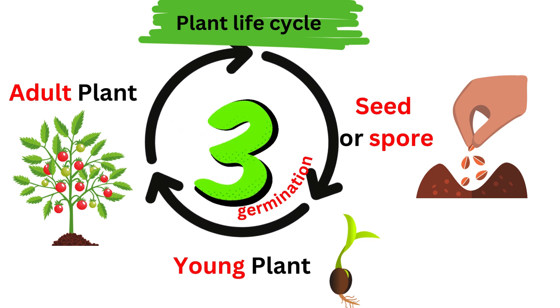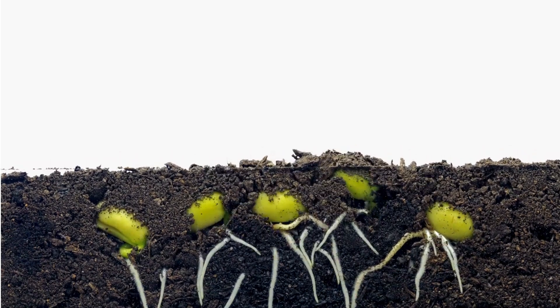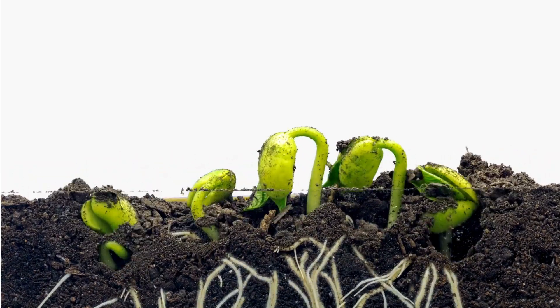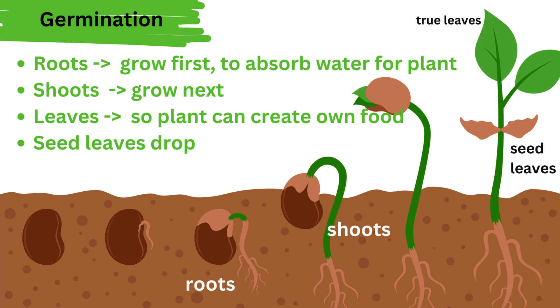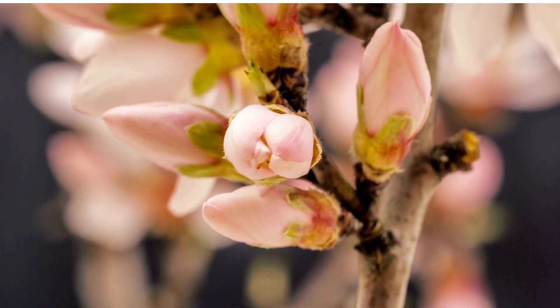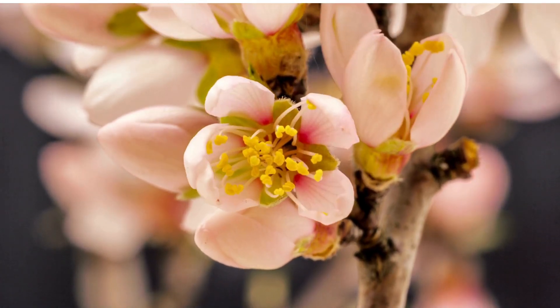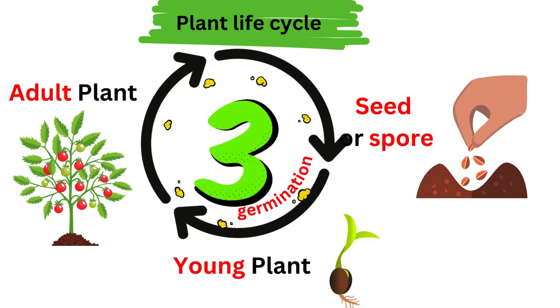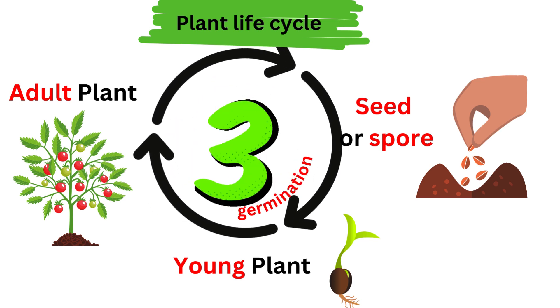Three stages in the plant life cycle. It's as easy as that. Roots, shoots, leaves, seed leaves drop. Plant matures, flowers and fruits grow, making seeds we can sow. And it all repeats again.